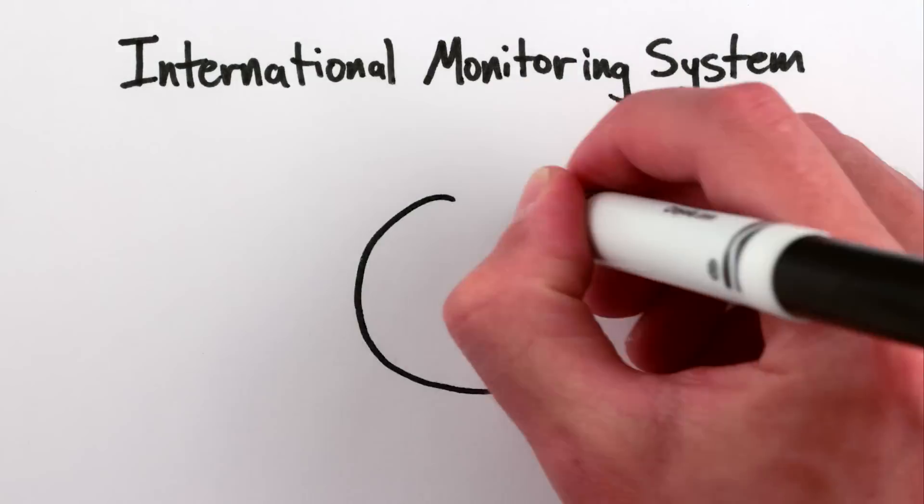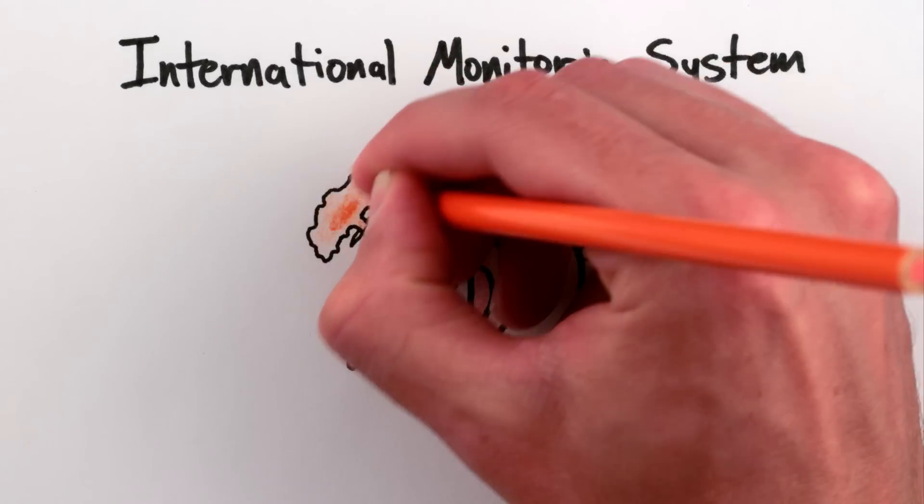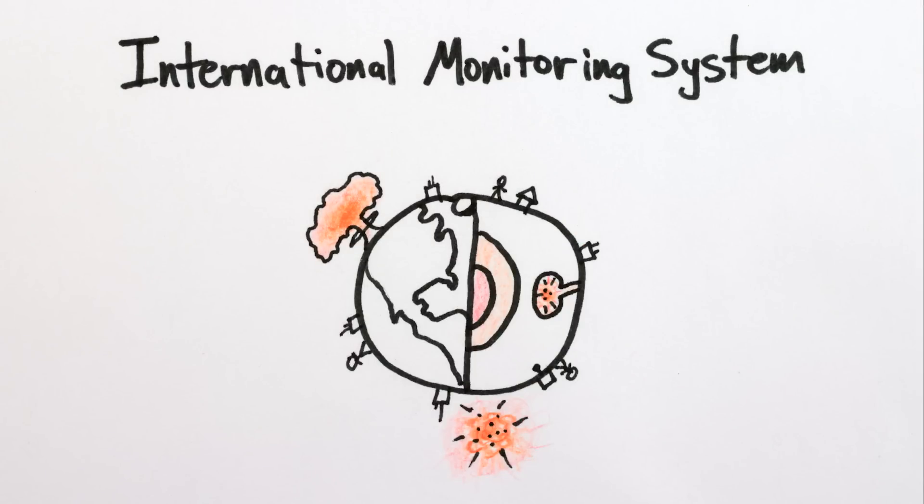In spite of this, the Test Ban Preparatory Commission has already developed a monitoring system that can detect pretty much any nuclear explosion that takes place anywhere on, above, or inside the Earth. Here's how it works.